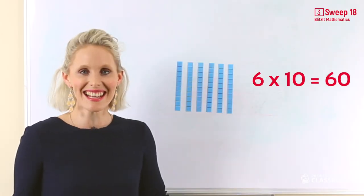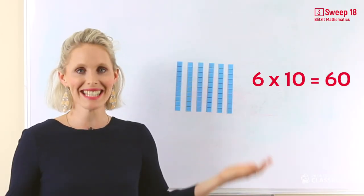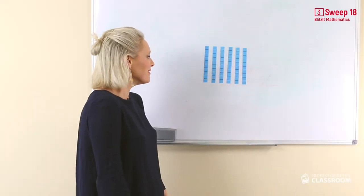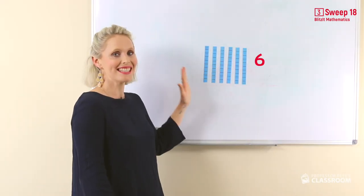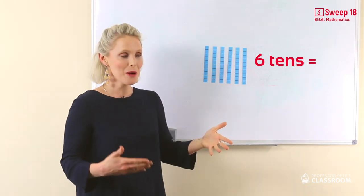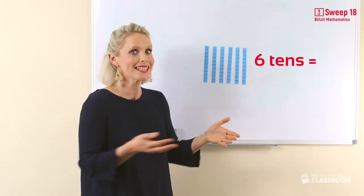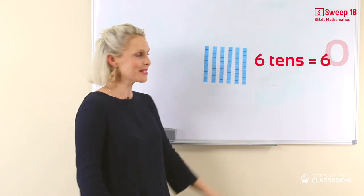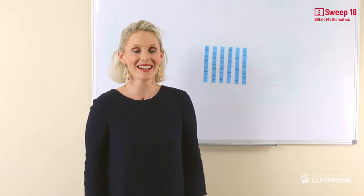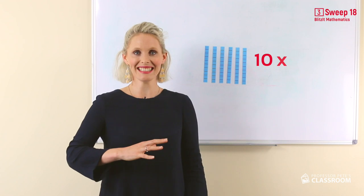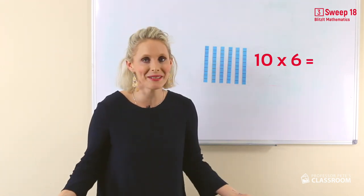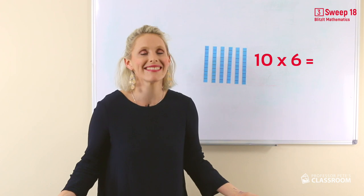We just need to ask ourselves how many tens are there. You can see there are six tens. So six multiplied by ten — six tens equals 60. Don't forget the turnaround: ten multiplied by six also has to equal 60.